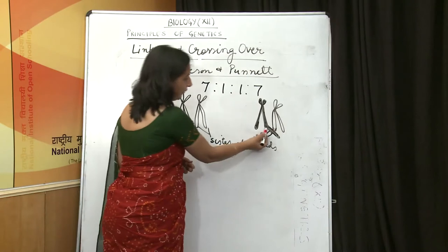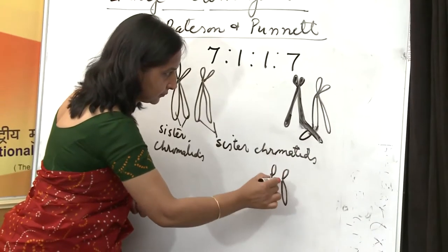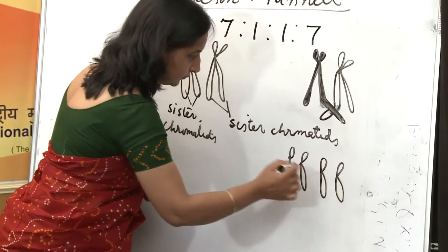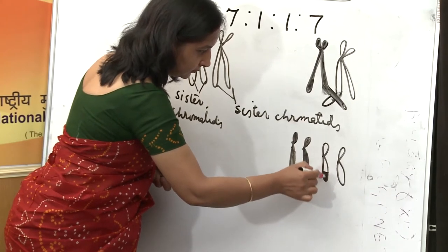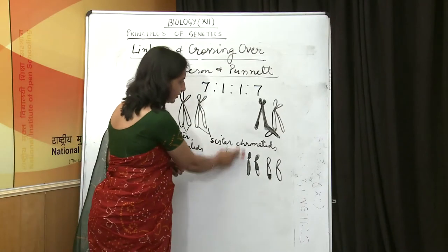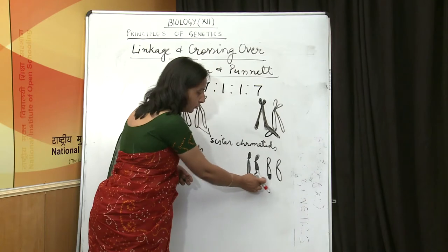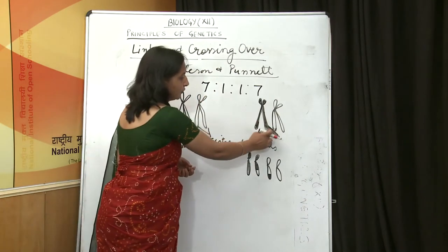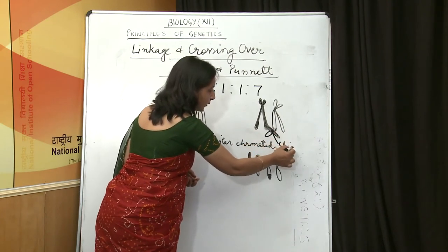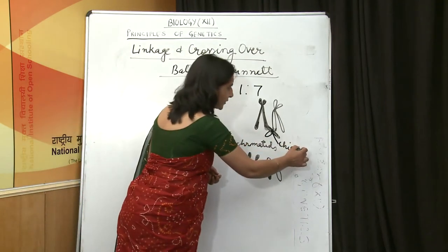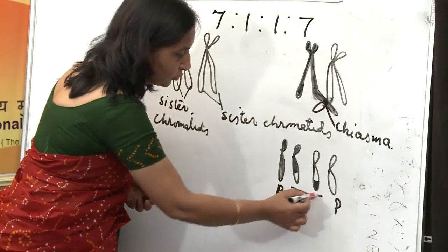After the exchange of genetic material between non-sister chromatids of homologous pair of chromosomes, we see four types of combinations: two are parental combinations — similar to the parent — and two are recombinants. These new combinations are only possible when there is exchange of genetic material between non-sister chromatids of homologous pair of chromosomes. The particular point where the actual physical contact during exchange of genetic material takes place is called a chiasma.